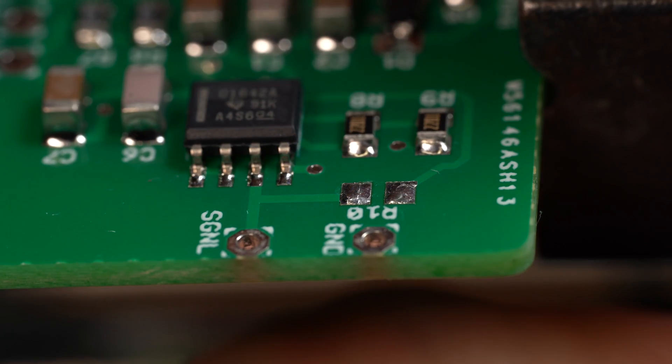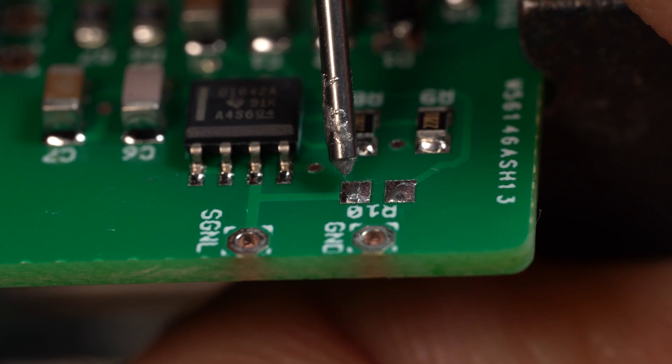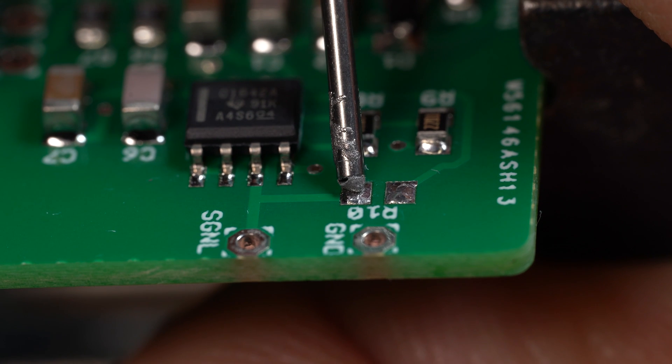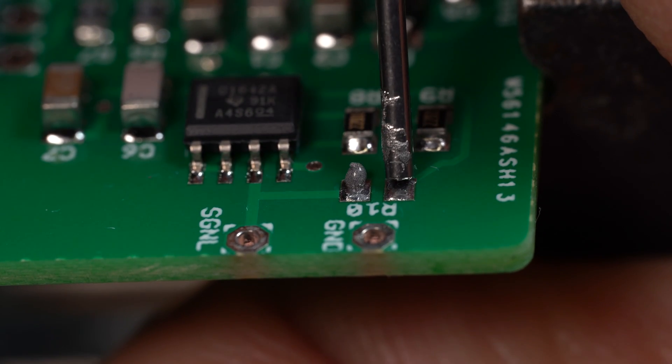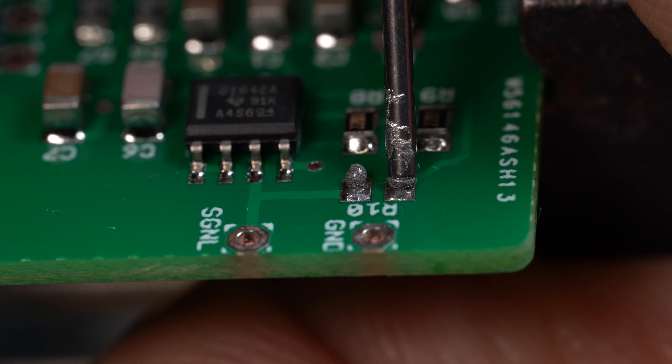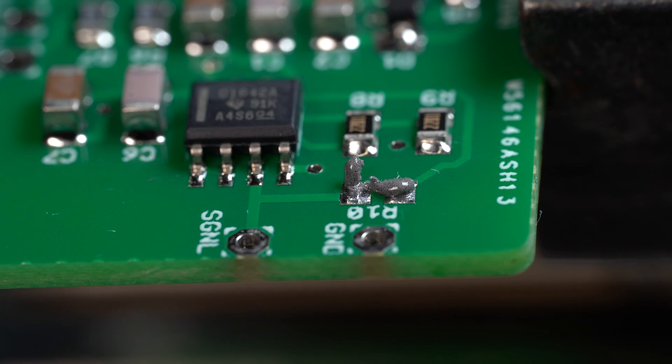Alright, now let's move on to surface mount components. Here we are with a close-up view of the circuit board with two pads. We need to get a little bit of solder paste on each of the pads, and notice this looks really horrible, but it's going to work. Trust me.